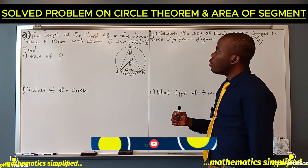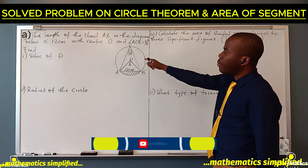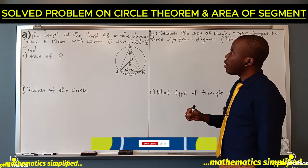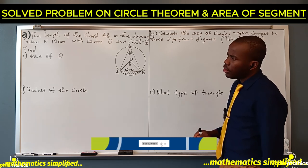The length of the chord AB in the diagram below is 12 cm with center O and angle ACB 30 degrees.